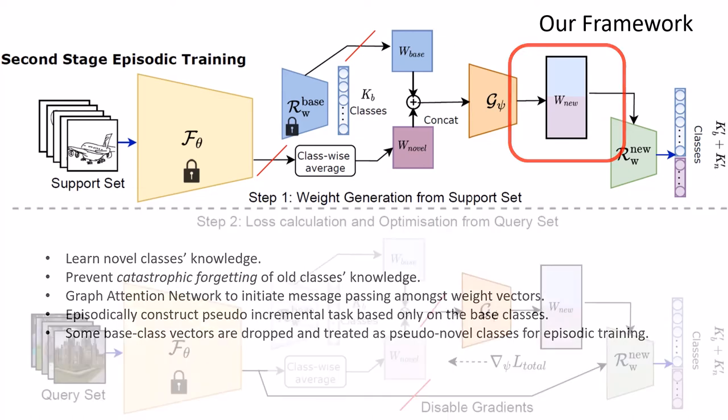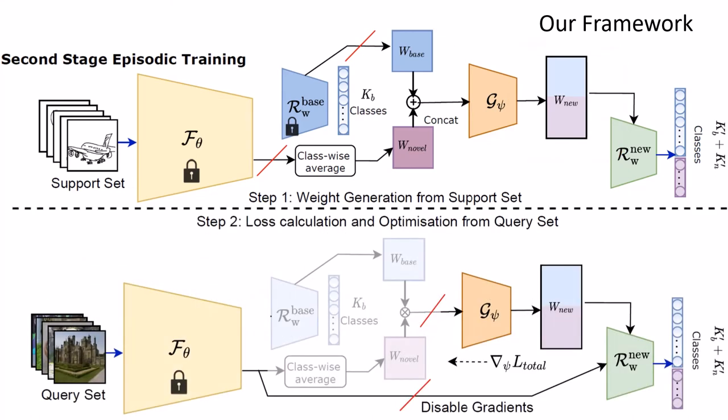In every episode, while support set S generates classifier weights, another query set Q involving real photos from both pseudo-base and novel classes are fed through pre-trained backbone, followed by classifier with newly generated weight matrix WNU to compute loss for optimization.